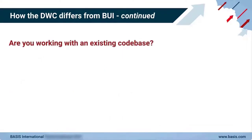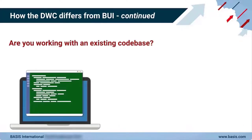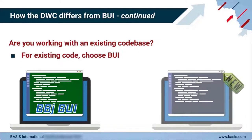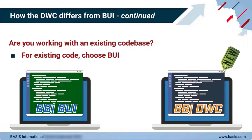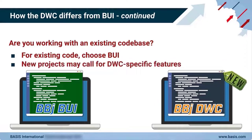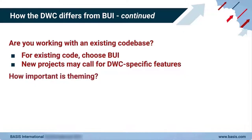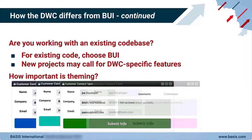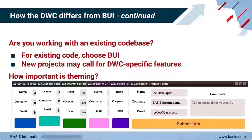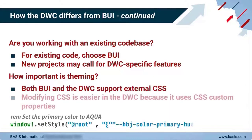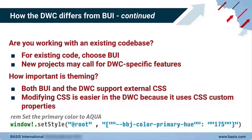If you're working with an existing codebase, it's probably easiest to start in BUI since that more closely replicates the thin client environment. How important is theming, or the ability to customize aspects of the app such as color accents, font sizes, padding, and spacing? While you can customize the appearance of your app in both clients, it's significantly easier to do so in the DWC.